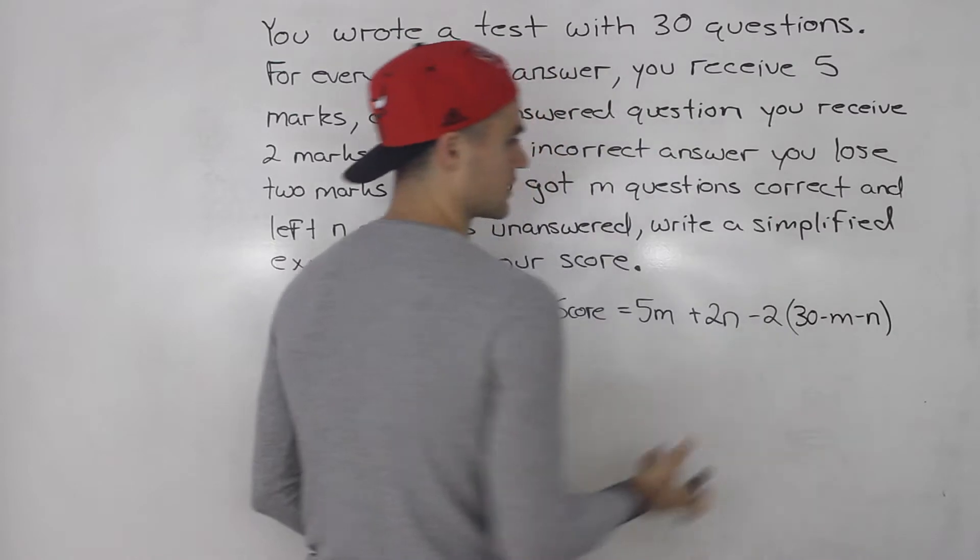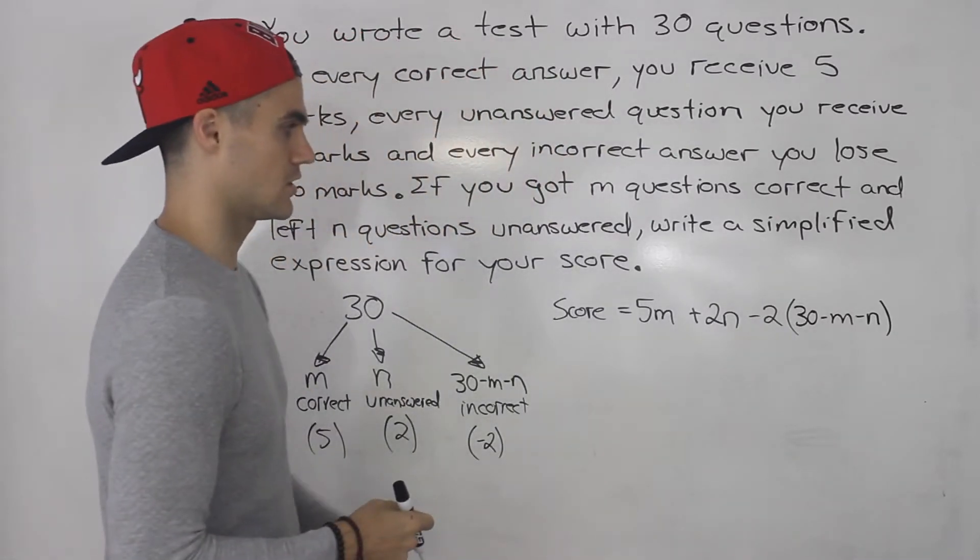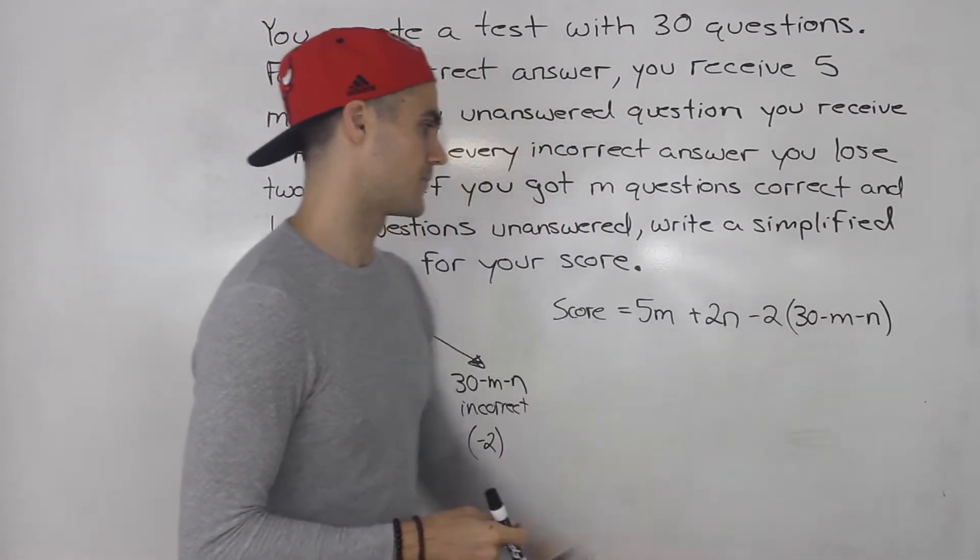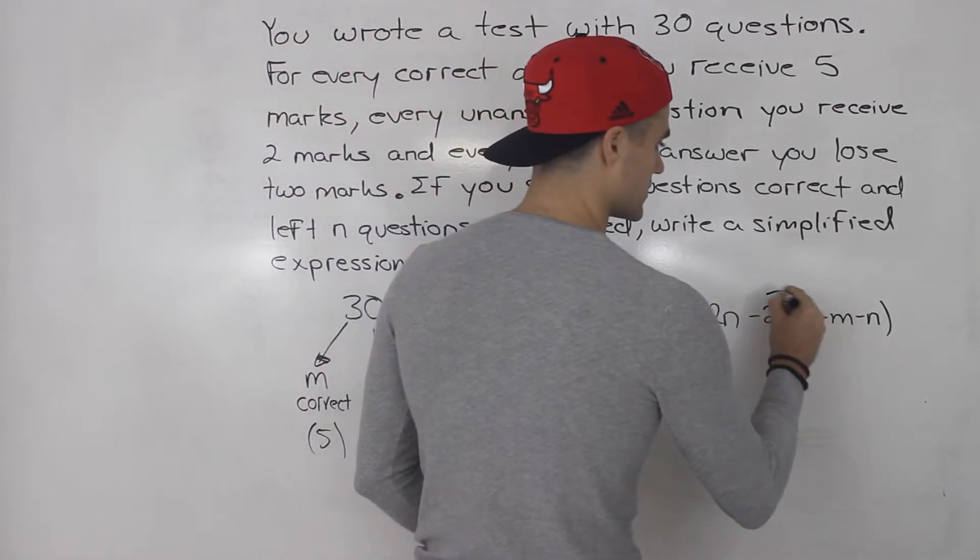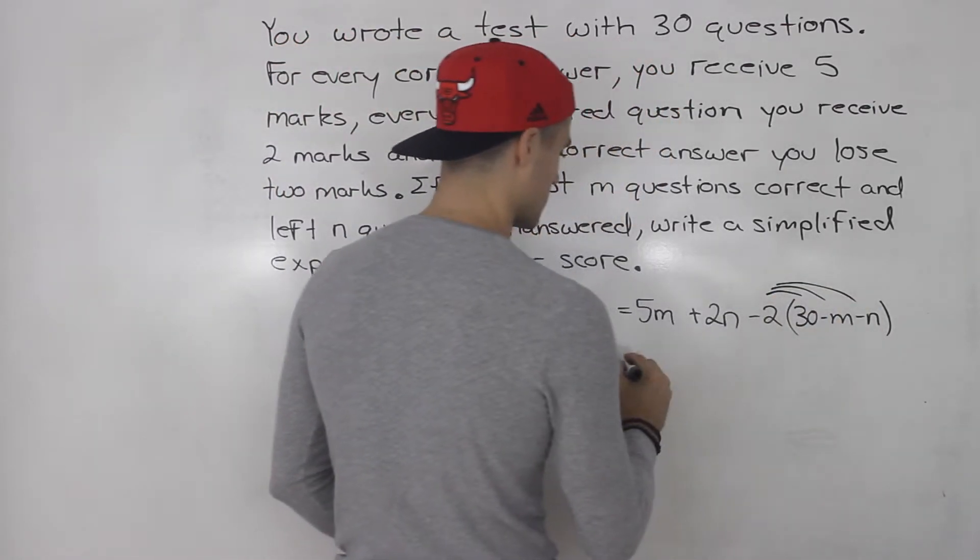So that right there is the trickiest part of the question. Knowing that that's what you do here. And then to simplify we would just simply distribute this negative 2 inside the bracket.